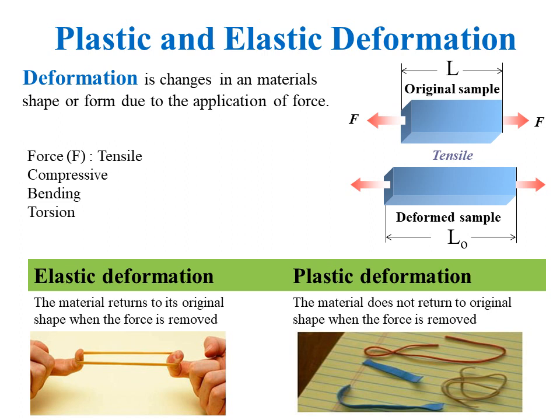But when the pulling force is very high, the rubber breaks and cannot go back to its original shape — this is known as plastic deformation. Plastic deformation is permanent and irreversible change in shape of a solid material, with or without fracture, under action of force. It occurs due to the breakage of a limited number of chemical bonds between atoms that make up the material.